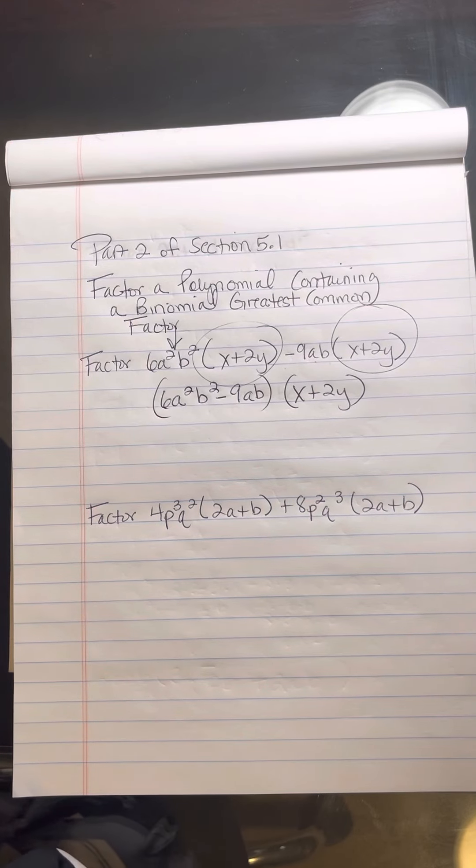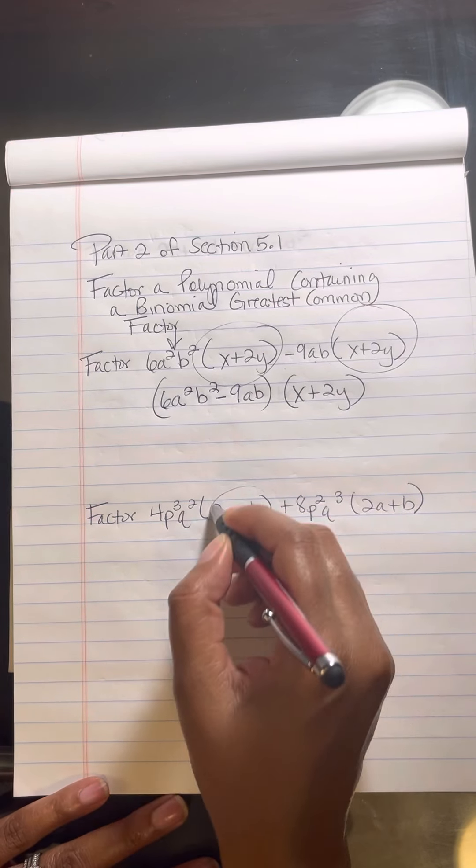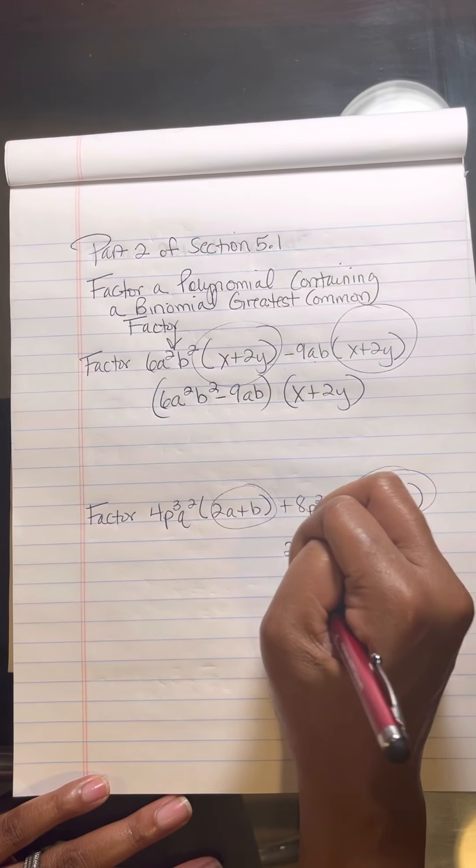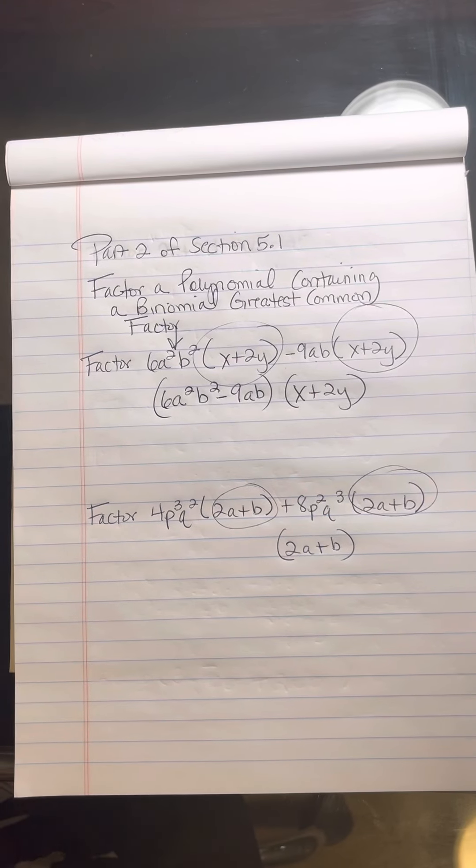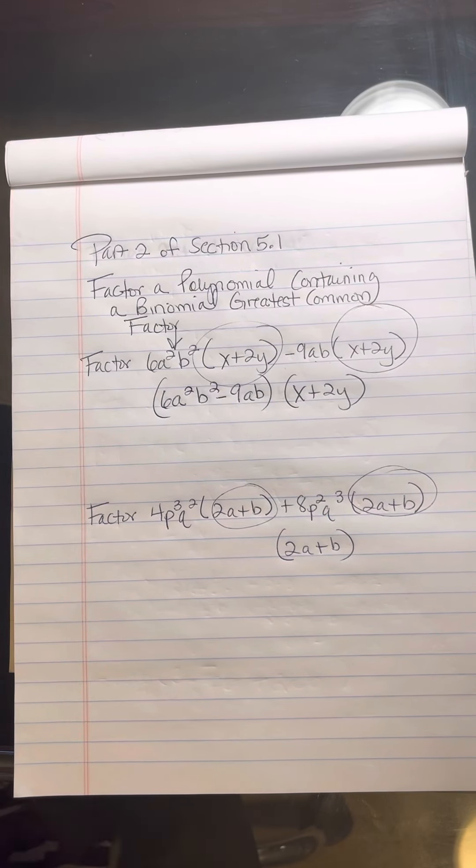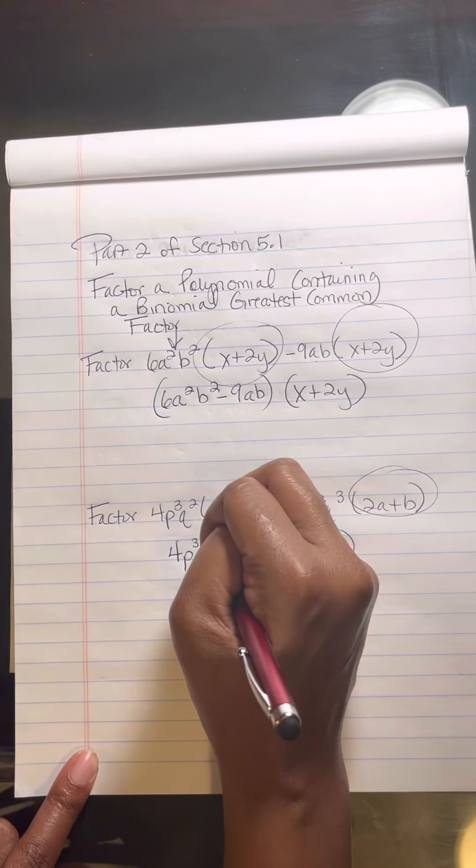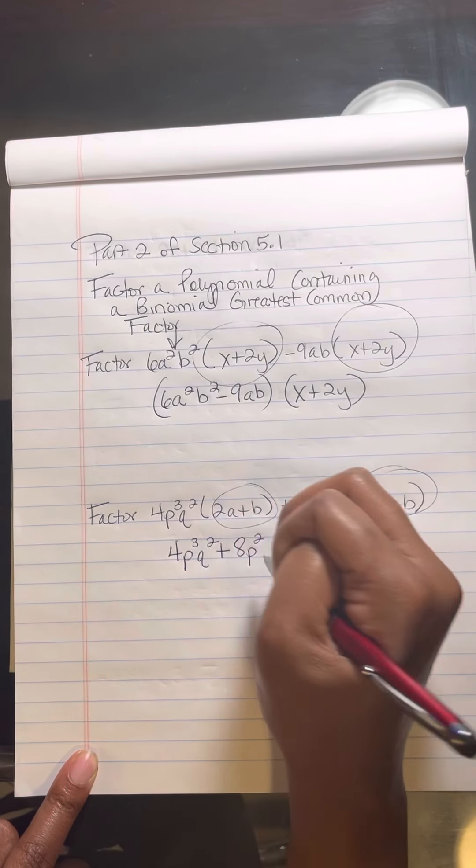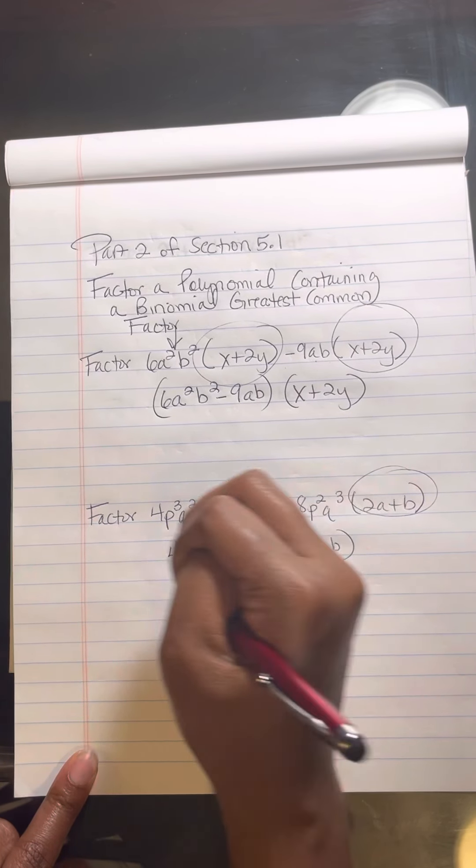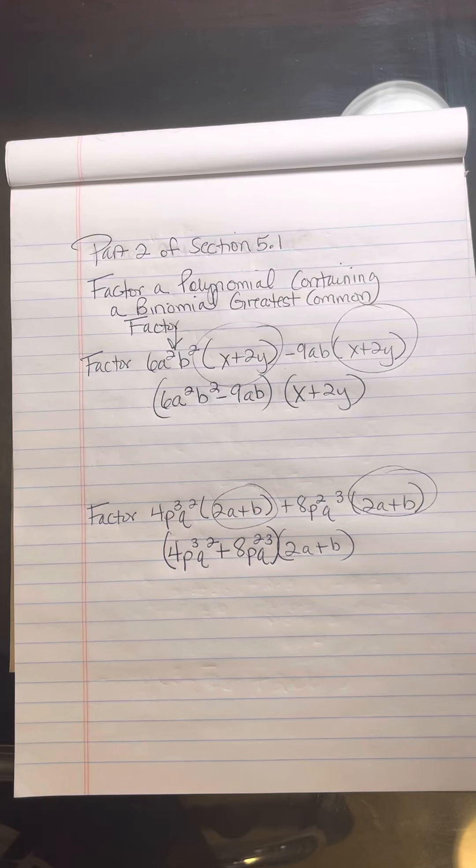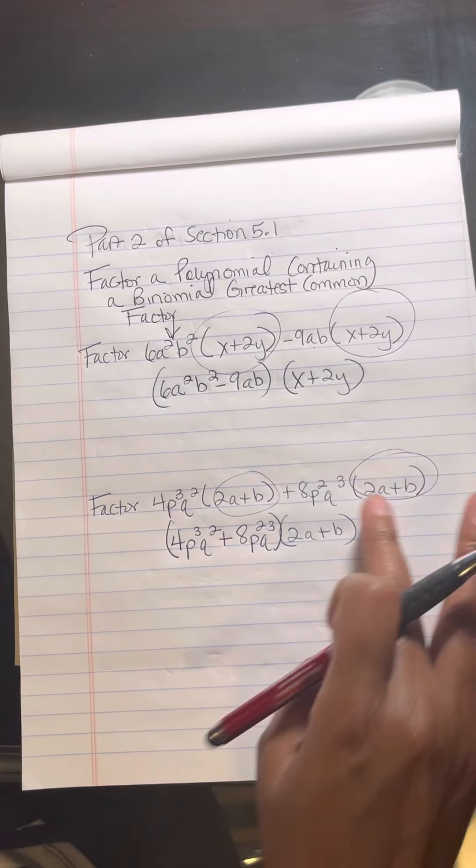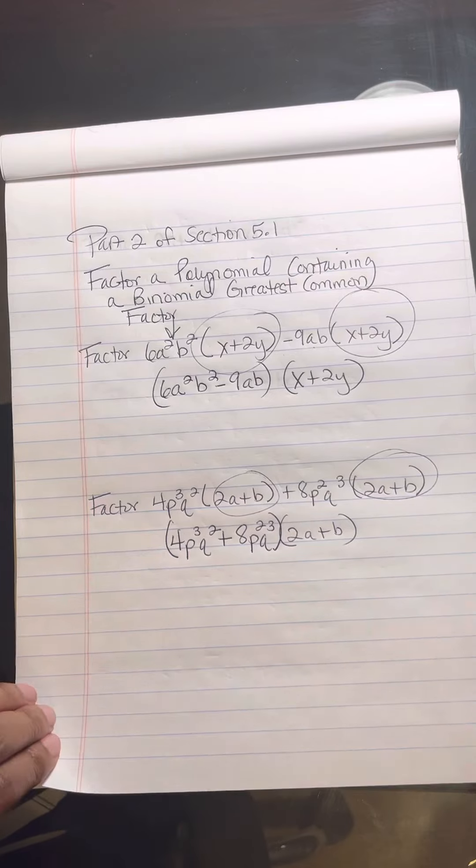Let's try another one because sometimes it's too easy and too good to be true, but that is the answer. This is the common factor. I'm going to write that down one time. And I'm looking to see what's left over. I'm going to bring down 4p³q² plus 8p²q³ and put that in parentheses and that is your answer. That's it. It's giving you a binomial greatest common factor already. You don't have to do anything to it.